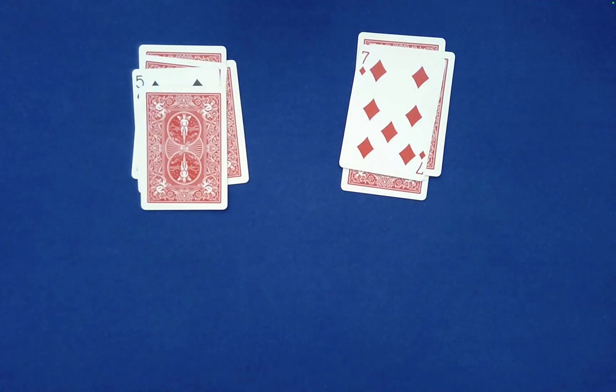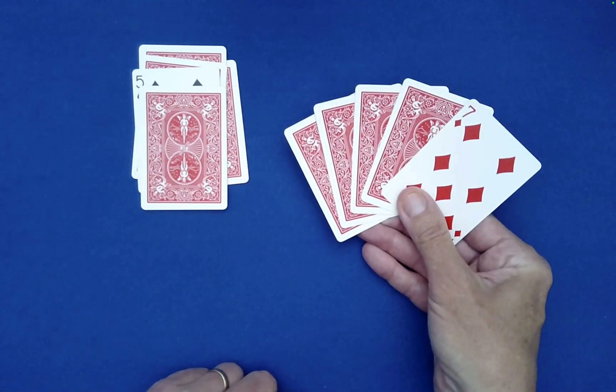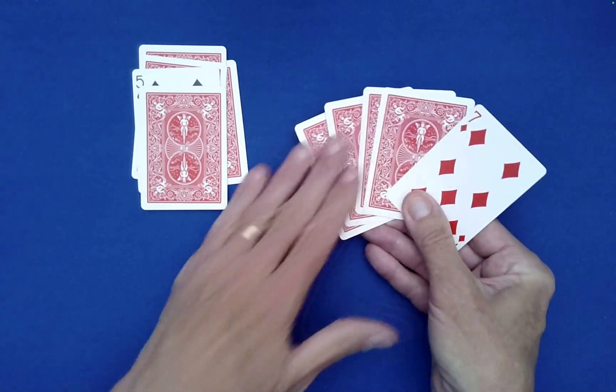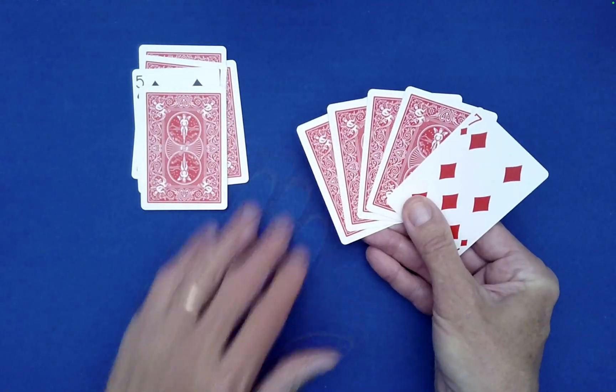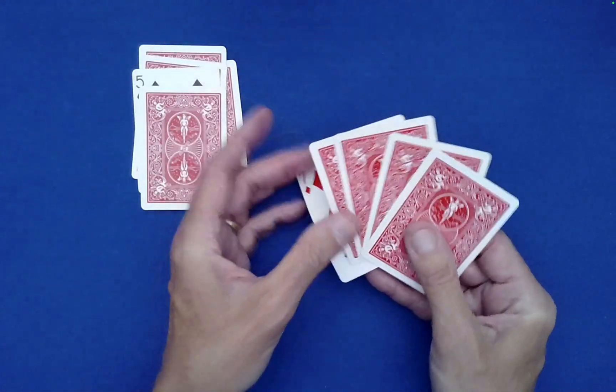So no matter how many times we deal into two piles, their card is safely over here. Okay, so with this, switching is not going to be harmed by any switching the spectator will do, because we don't even care about these. These are like filler cards, so they can switch these around as much as they want.